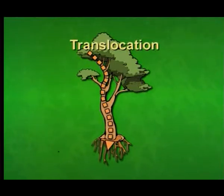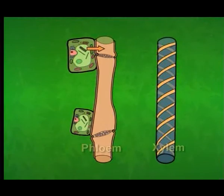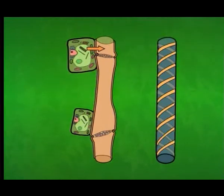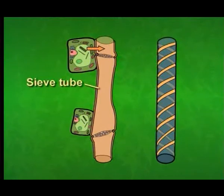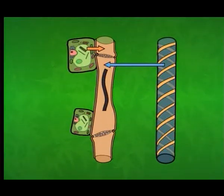Translocation through phloem is thought to occur this way. Glucose from photosynthesis moves into the phloem. Because the water in the phloem is now mixed with sugar, we say it has a lower concentration of water. Cells called sieve tubes enable the movement of water by osmosis from the xylem into the phloem. This increases the hydrostatic pressure in the phloem. The increased pressure moves the material through the phloem, similar to the way water is moved through a hose by pressure at the faucet.